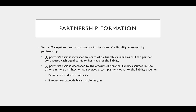In summary, Section 752 requires two adjustments. First, in the case of a liability assumed by the partnership, the partner's outside basis is increased by the partner's share of partnership liabilities, as if the partner contributed cash equal to his or her share of the liability. So if the partnership has $100,000 in liabilities and the partner is a 20 percent partner, the partner will increase his or her basis by $20,000. Second, the partner's basis is decreased by the amount of personal liability assumed by the other partners, as if he or she had received a cash payment equal to the liability assumed.